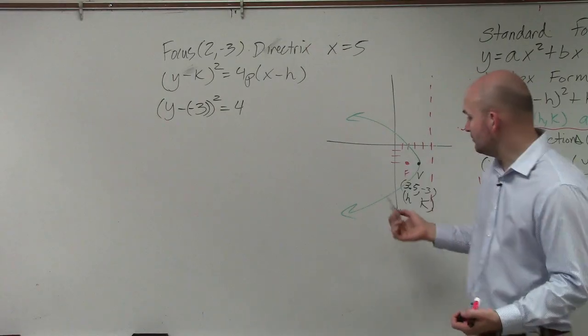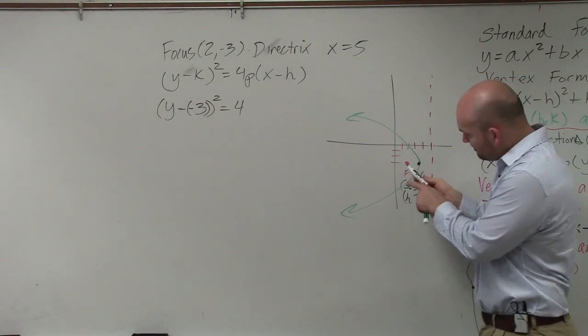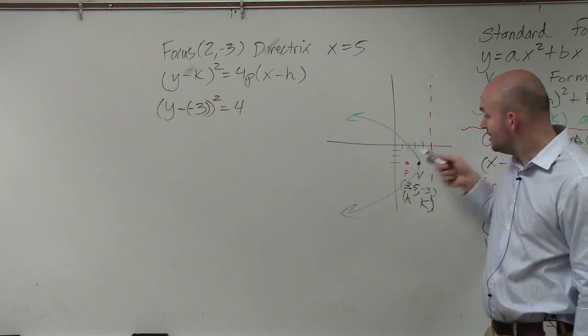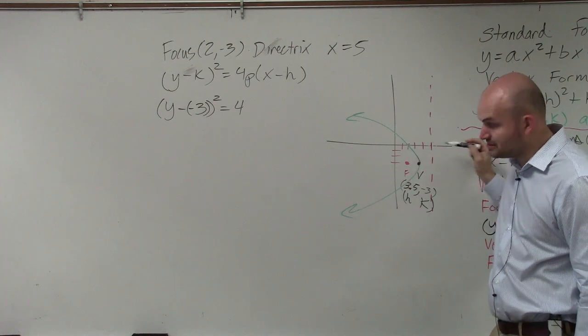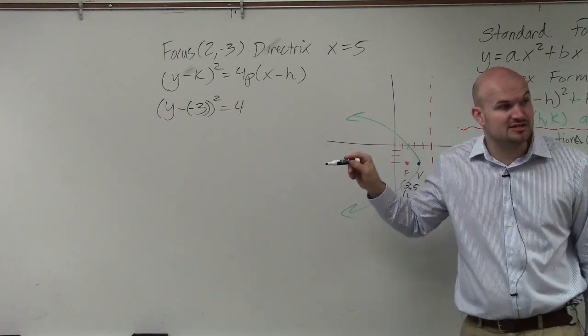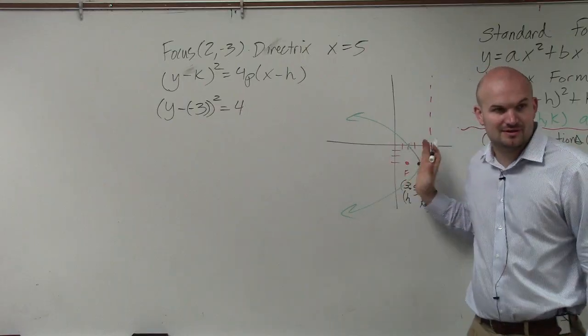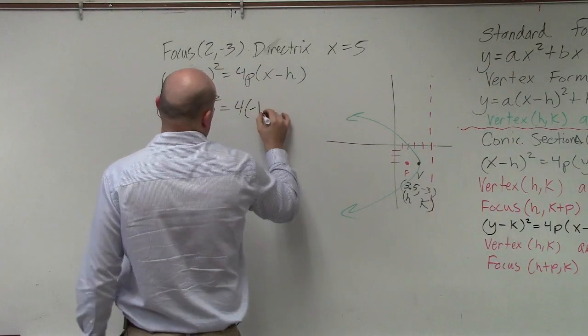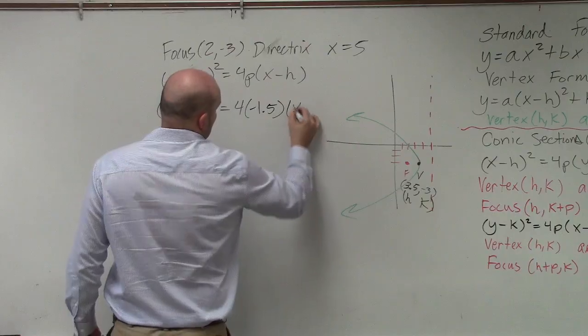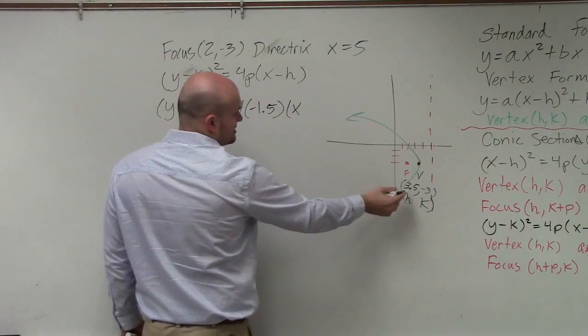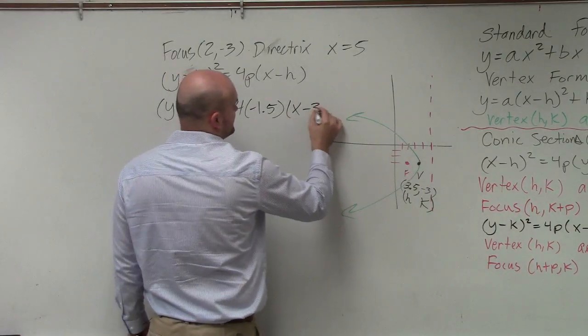Now, p is important. We know that the distance from my vertex to my focus was 1.5. But to go from my vertex to my focus, I'm going to the left. So is p going to be positive or negative? Negative. And then that's going to be x minus h, so it's minus 3.5.